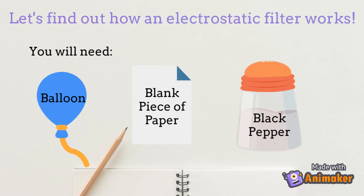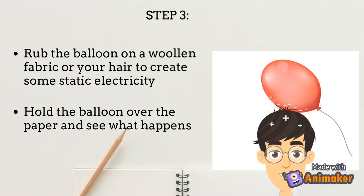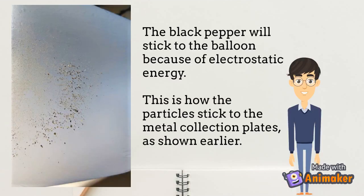Let's find out how the electrostatic filter works. For this experiment you will need a balloon, a blank piece of paper and some ground black pepper. Step 1: sprinkle some black pepper on the paper. Step 2: blow up the balloon and tie it up. Step 3: rub the balloon over a woolen fabric or your hair to create some static electricity. Hold your balloon over the paper and see what happens. The black pepper will stick to the balloon because of electrostatic energy. This is how the particles stick to the metal collection plates as shown earlier.